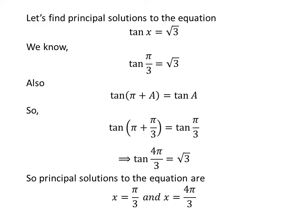So, the principal solutions to the equation tangent of x is equal to square root of 3 are pi upon 3 and 4 times pi upon 3.